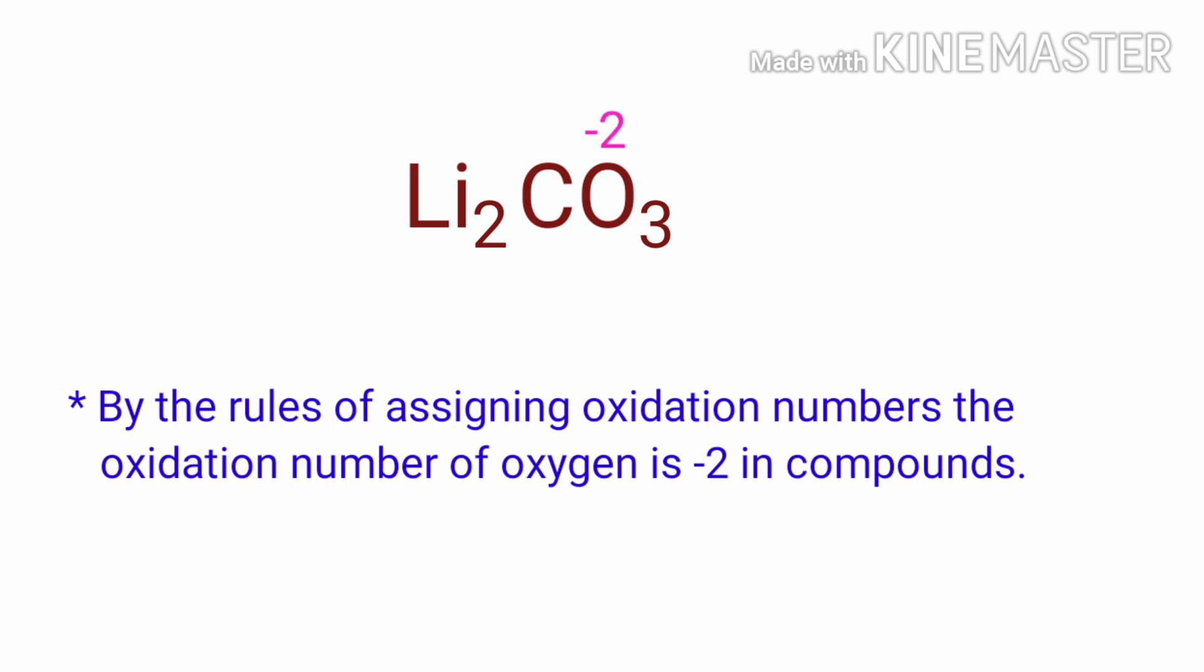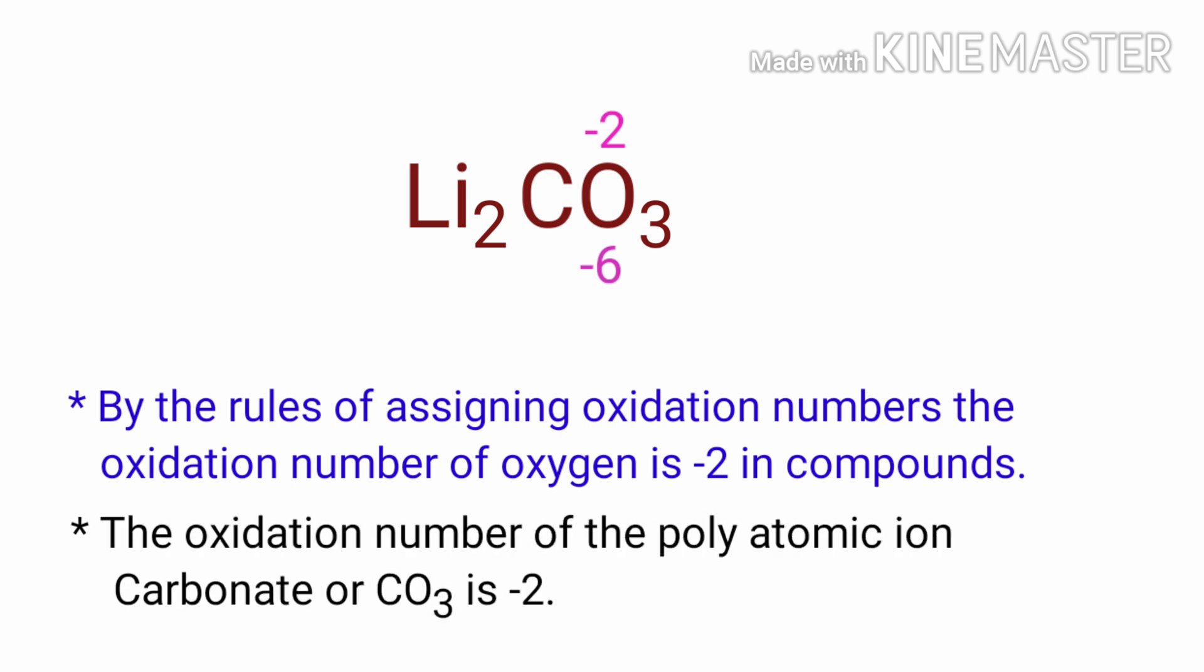We can write the oxidation number of the element above its symbol and the total number of the oxidation number of the atoms below its symbol. The oxidation number of the polyatomic ion carbonate or CO3 is minus two.